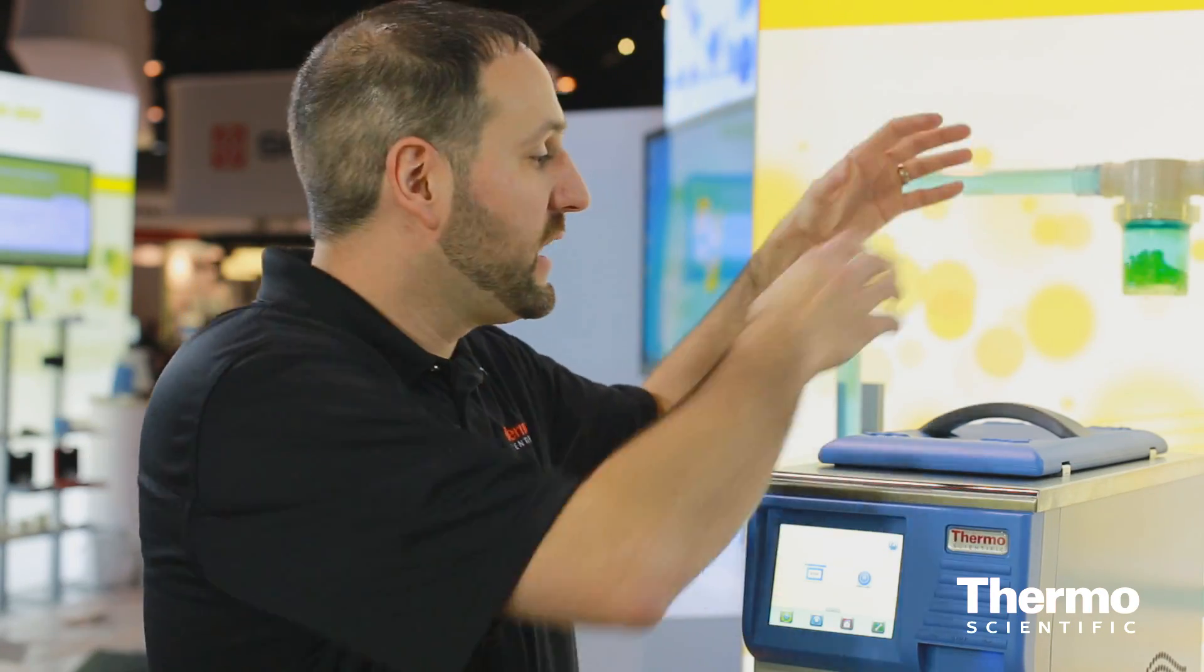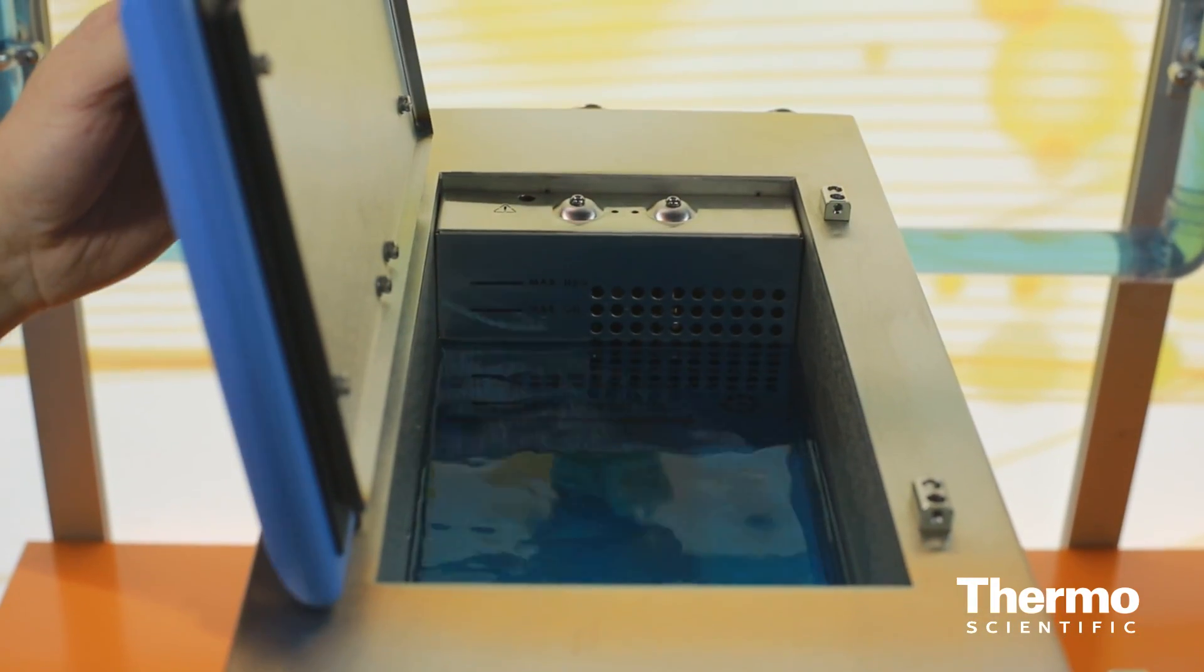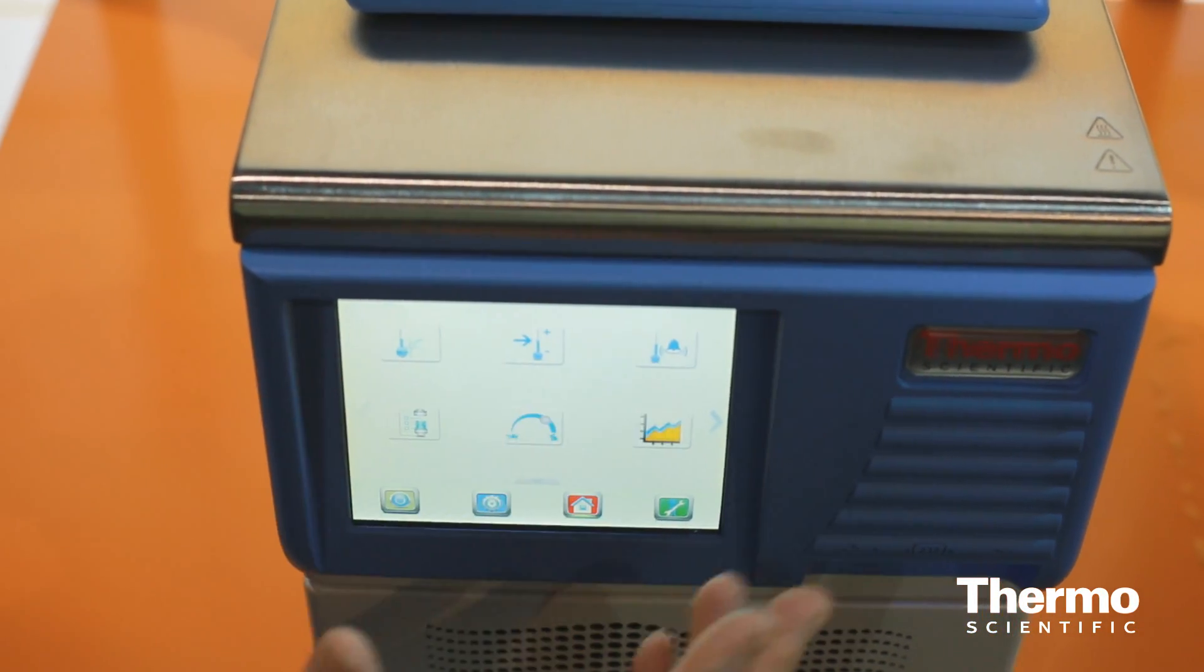Traditionally, bath circulators have a control head and coils in the bath. We got rid of it. Took everything out, put it in the unit, in the front, inside the unit itself. You can maximize your sample size. You can maximize your capability.